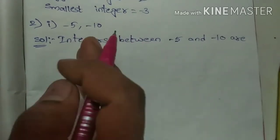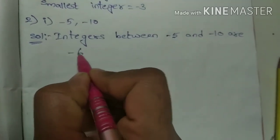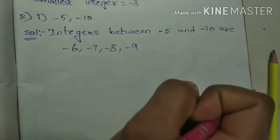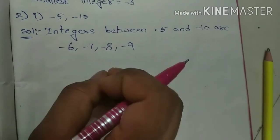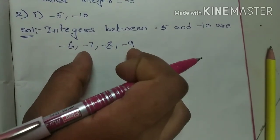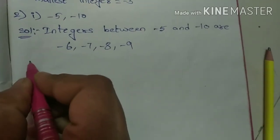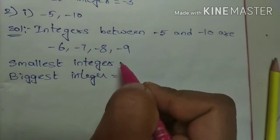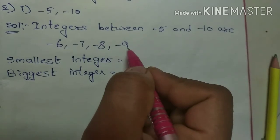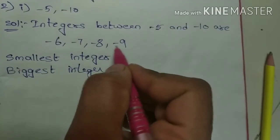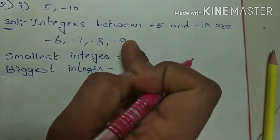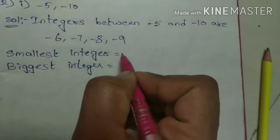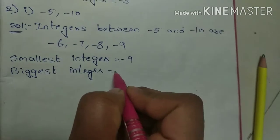So integers between minus five and minus ten are: minus six, minus seven, minus eight, and minus nine. These are the integers in between these two integers. We should find out which one is the biggest and which one is the smallest. All are negative only. Which one has the negative sign with the big number — that is the smallest integer. So minus nine is the smallest integer and minus six is the biggest integer.